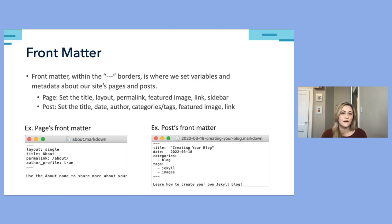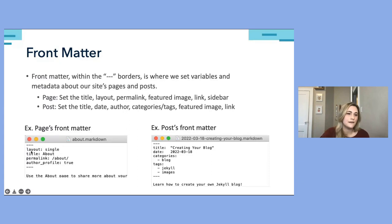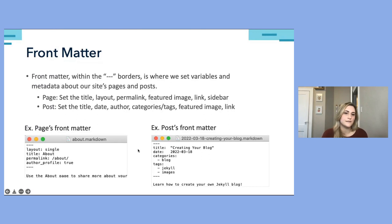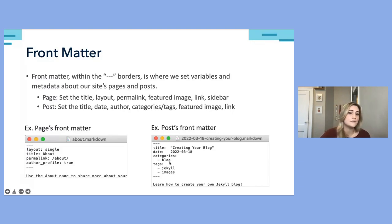Here are two examples of how to configure the front matter. For the about page, I've set the layout to single, set the title and permalink, and enabled the author profile. For a post example, I've set the title and date — which determines display sequence — and assigned it one category and a couple of tags.